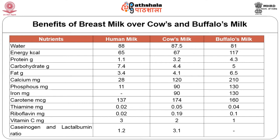The amount of fat is minimum in breast milk at only 3.4 grams, maximum in buffalo's milk at 6.5 grams, and 4.1 grams in cow's milk. The amount of calcium is very low — 28 milligrams in breast milk, 120 milligrams in cow's milk, and 210 milligrams in buffalo's milk. Phosphorus is only 11 milligrams in breast milk, 90 milligrams in cow's milk, and 130 milligrams in buffalo's milk. Comparative to breast milk and cow's milk, buffalo's milk is more nutrient dense, but it is not recommended as overdosage may lead to toxicity.